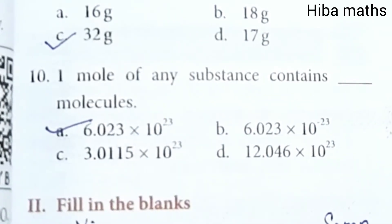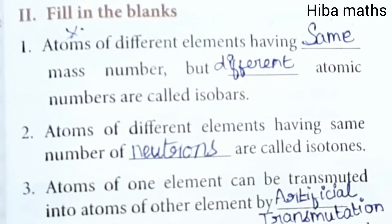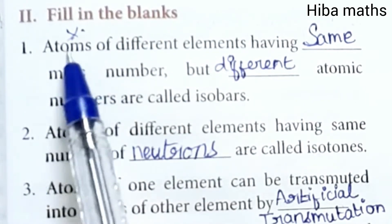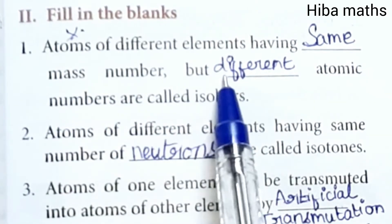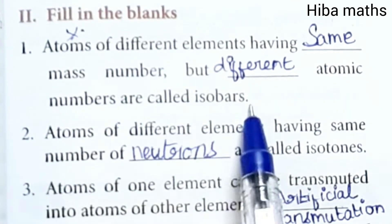Fill in the blanks. First question, important: Atoms of different elements having same mass number but different atomic numbers are called isobars. Atoms of different elements having same number of neutrons are called isotones.